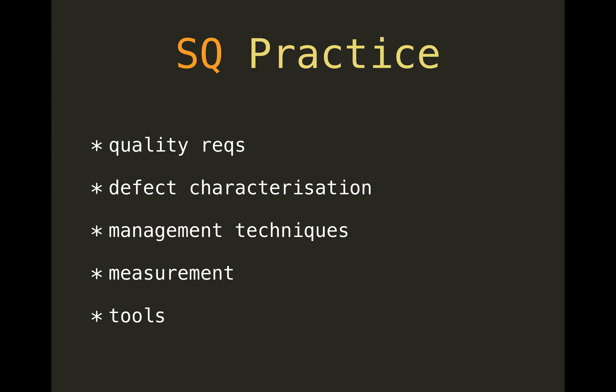The practical considerations of software quality include quality requirements — things like influence factors, dependability, and different levels of integrity within the system.